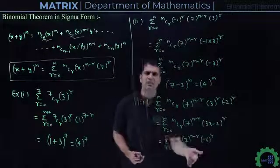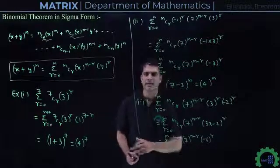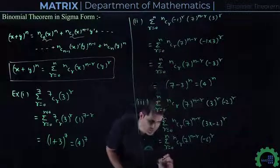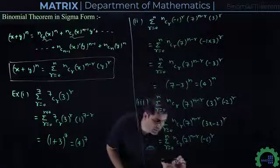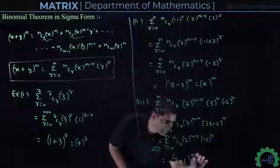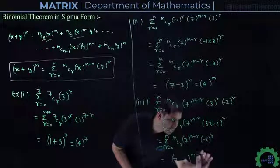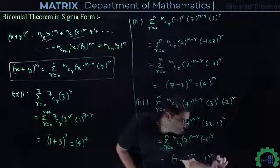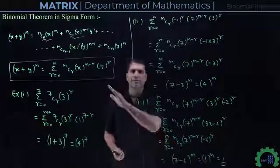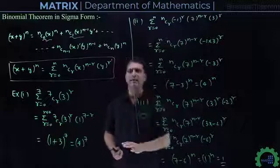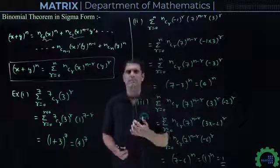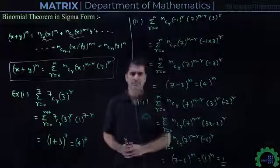Now this is in standard form, so directly we can apply (X + Y)^N. This equals (7 + (-6))^N = (7 - 6)^N = 1^N = 1. So basically, we need to remember that any binomial expansion can also be written in sigma form.